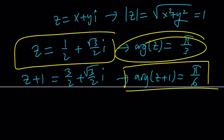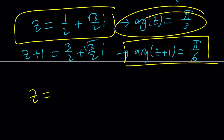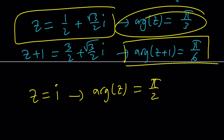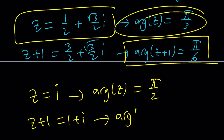Let's try a simpler example: Z equals i, which has argument pi/2. Then Z plus 1 equals 1 plus i, which is the point (1,1), and its argument is pi/4 — the diagonal. And pi/2 equals 2 times pi/4, so this works again. So all numbers on the unit circle satisfy the original equation.